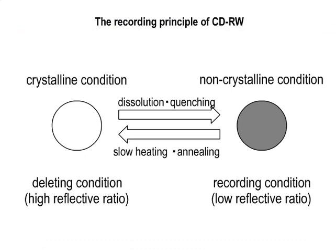The principle of recording is as follows. The temperature of the metal of the recording layer is controlled, and a crystalline or non-crystalline condition is created. The difference in the reflective ratio of laser light is used to switch between the erased and recorded states.